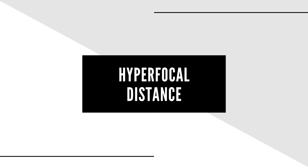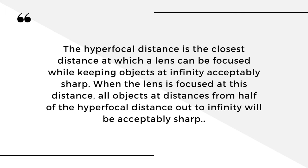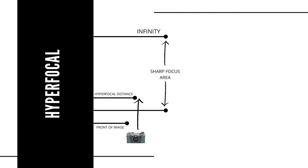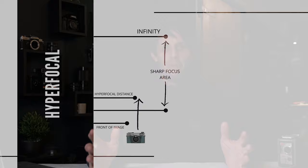First up, we've got hyperfocal distance focusing. According to Wikipedia, the hyperfocal distance is the closest distance at which a lens can be focused while keeping objects at infinity acceptably sharp. When the lens is focused at this distance, all objects from half the hyperfocal distance out to infinity will be acceptably sharp. The problem for me is I found hyperfocal distance focusing incredibly difficult to comprehend. I've really struggled with it, tried it, spent time practicing it, and just found it really complicated.